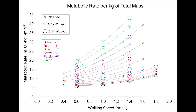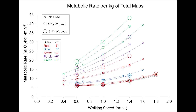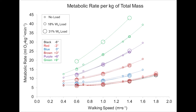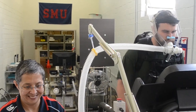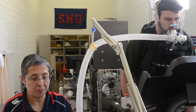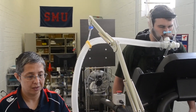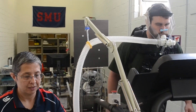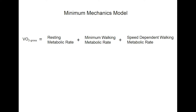When the same metabolic rates are expressed per kilogram total mass, each kilogram of body plus load incurs the same metabolic cost for the grade and speed condition. Thus, walking economy varied in accordance with the grade-specific requirements to lower, maintain, or elevate the total mass with each step.